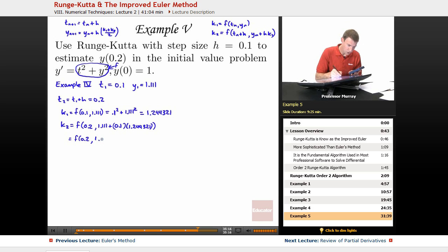So, it looks like I've got 1.235 here. And if I plug that into f, I've got 0.2 squared plus 1.235 squared. And again, I'm going to calculate that out on my calculator. And I see I get 1.566 for my k2.